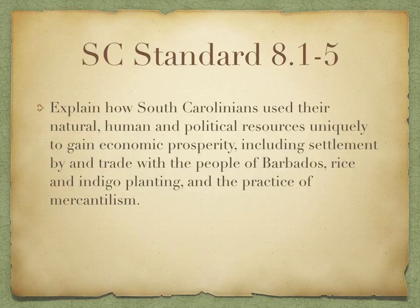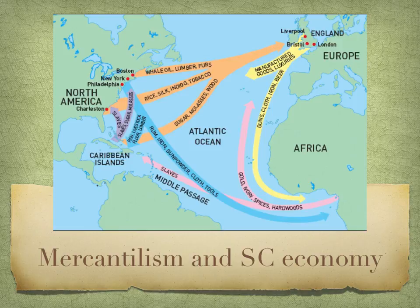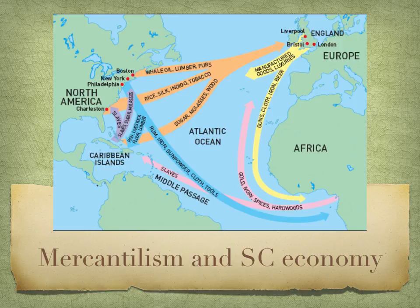We're talking about the natural, human, and political resources — how they used those to gain economic prosperity, or in other words, how did they get rich off of mercantilism? We have this map of the triangular trade route. From South Carolina, they grew rice, indigo, silk, and other things, and exported those to England. England, in turn, traded with Africa and brought African slaves through the Caribbean up into North America to help South Carolina grow those raw materials.